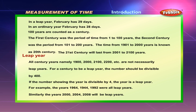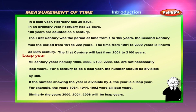100 Years are counted as a Century. The 1st Century was the period of time from 1 to 100 Years. The 2nd Century was the period from 101 to 200 Years. The time from 1901 to 2000 is known as the 20th Century. The 21st Century will last from 2001 to 2100 Years.